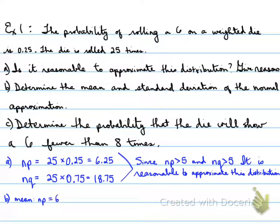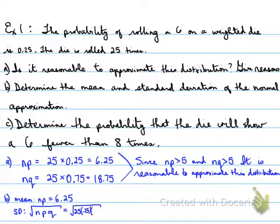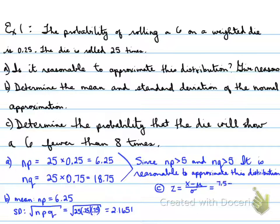For Part B, the mean is n times p, which is 6.25. The standard deviation is the square root of n times p times q: 25 times 0.25 times 0.75, which gives us 2.1651. For Part C, we need to calculate the Z-score. The value we want is fewer than 8, so we use 7.5.